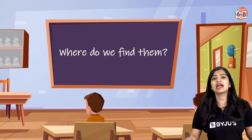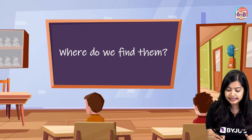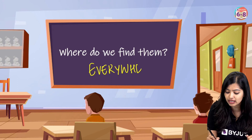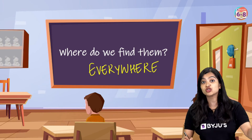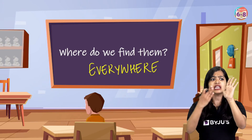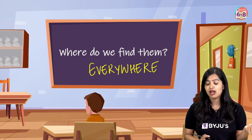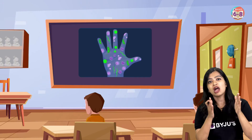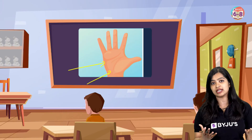Where do we find microorganisms? The answer is microorganisms are everywhere. They are in the air, in the soil, in the water. As a matter of fact, they are even on the surface of our hands and our skin. If you take a closer look, you will understand that there are various microbes that settle on the surface of our skin.